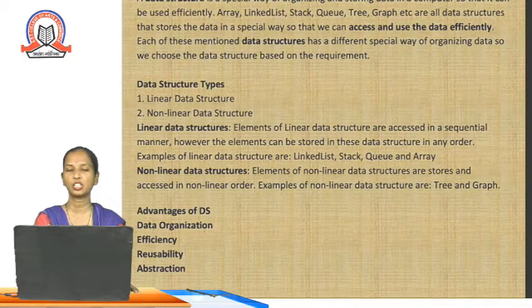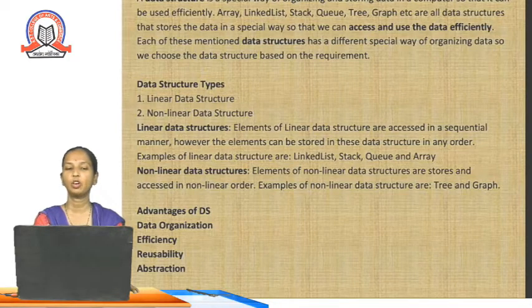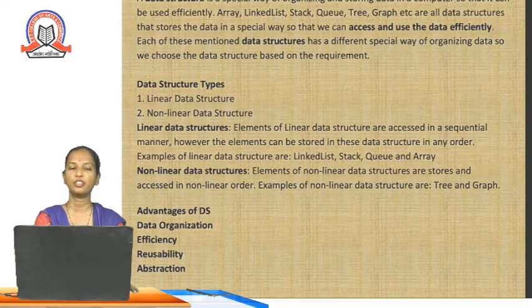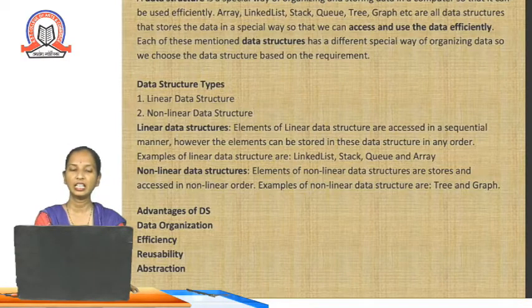The second type is non-linear data structure, where the data is not arranged in a linear fashion. Examples are tree and graph. The advantages of data structures include: first, data organization — data will be organized in a well-mannered fashion. Second, the data will be accessible in an efficient manner. Third, reusability — once a piece of code is created, it is available to everyone to reuse. Fourth, abstraction — the concept of abstract data type can be created using data structures.